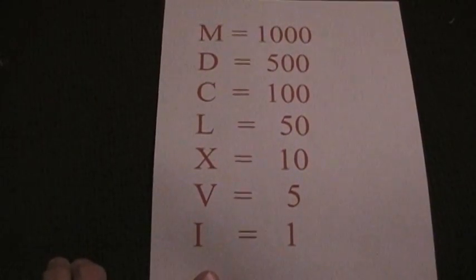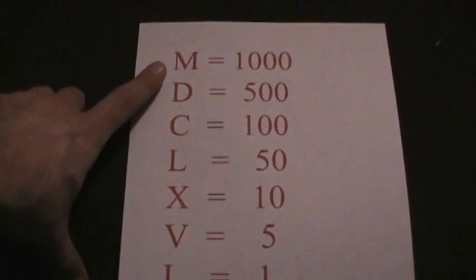So if you see MCM, that's the 1900s. Because that's a thousand, and you're going to take a hundred from a thousand by putting it in front. So the first thousand is there, and if it was two thousand, it would be MM. If we put C in front of the M, that would make 900. So to make 1900, it would be MCM.